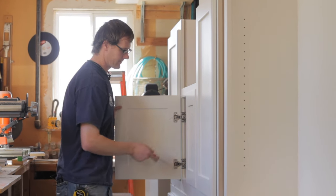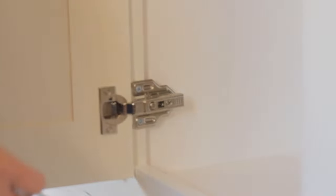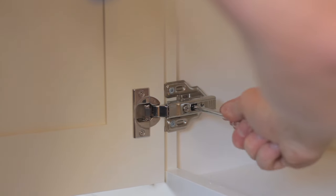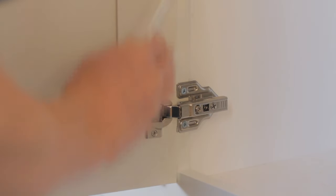So now all of the hinges have three adjustments. We have this one which is going to allow us to go in or out depending on how we need to. This one which is going to take us front and back, and then this middle one which is going to take it up and down as it needs to go.